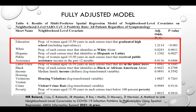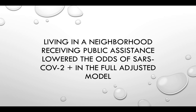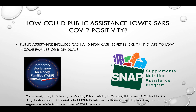Four features remained statistically significant. Interestingly, two increased the risk of SARS-CoV-2 positivity and two decreased it. Things which increased risk were having at least a high school education — our proxy for education status — as well as the proportion of individuals identifying as Hispanic or Latinx in a neighborhood. Two features decreased the risk: the proportion of individuals identifying as white, and the proportion of individuals receiving public assistance. Living in a neighborhood with public assistance recipients lowered the odds of SARS-CoV-2 positivity in the fully adjusted model.